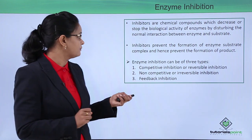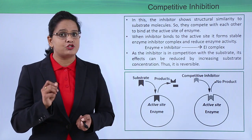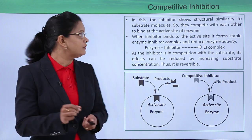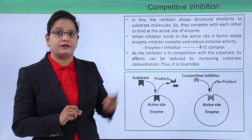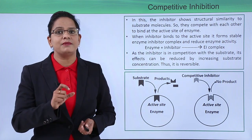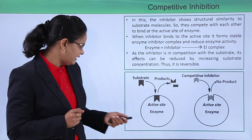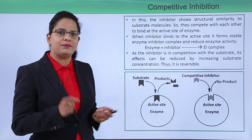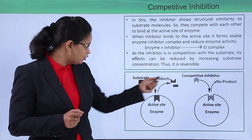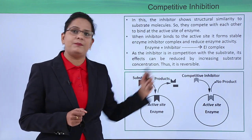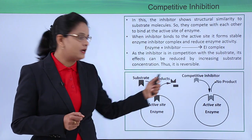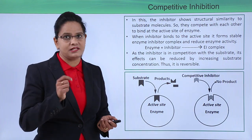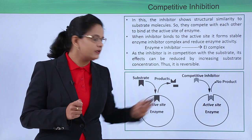In competitive inhibition, the inhibitor molecule is structurally similar to the substrate. As you can see in the diagram, this is an enzyme with an active site. The substrate is complementary to the active site and products are formed normally. The competitive inhibitor is not the same as the substrate, but its conformation is somewhat similar to the active site and it structurally resembles the substrate, so it can bind to the active site.